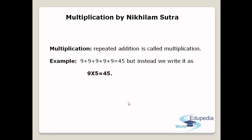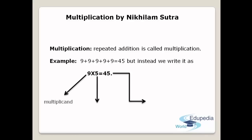Now let us see what 9, 5, and 45 are called. The 9 is called the Multiplicand — the number that is being multiplied. The number 5 is called the Multiplier — the number that is multiplying the Multiplicand. And 45, the answer, is called the Product. Whenever you multiply any two numbers, the answer obtained is called the Product.